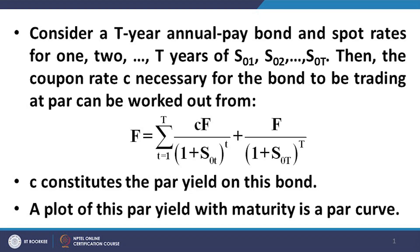The formula for the par bond yields is given on the slide. We have the coupon rates as the unknown quantities, and we use the respective spot rates corresponding to various maturities to arrive at the coupon rate which corresponds to the bond quoting at par value.